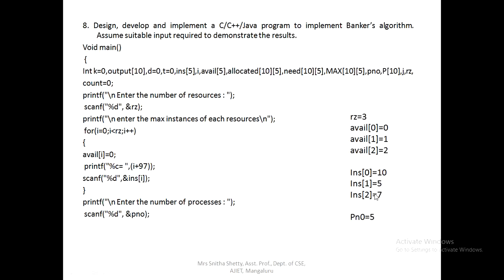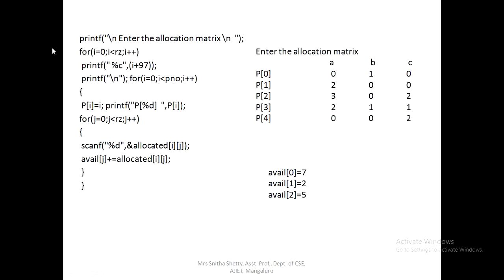Next, enter the number of processes — process_number = 5. Then we read the allocation matrix. This is a two-dimensional array, so we use nested for loops. We print 'Enter the allocation matrix' and print the resource labels A, B, C. Then for each process P0 through P4, we read the allocation values.